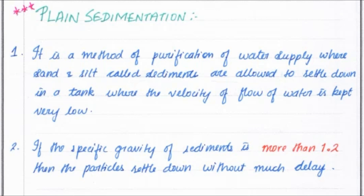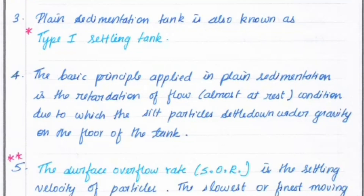If the specific gravity of the sediment is greater than 1.2, it will easily settle down, because higher specific gravity creates more weight, so the particle settles down more readily. The primary sedimentation tank is also called the Type 1 sedimentation tank.